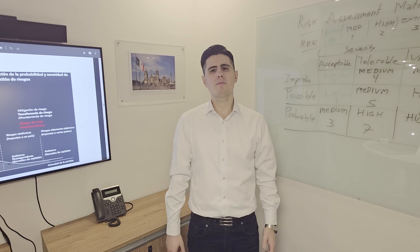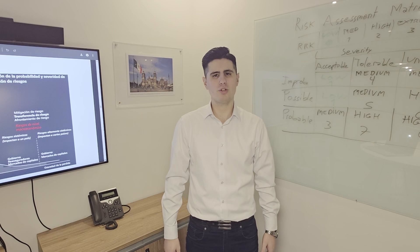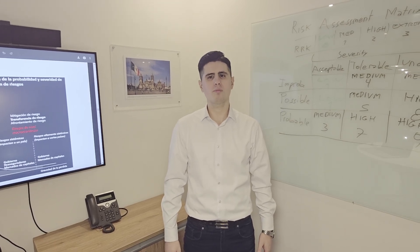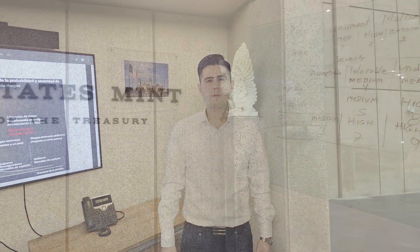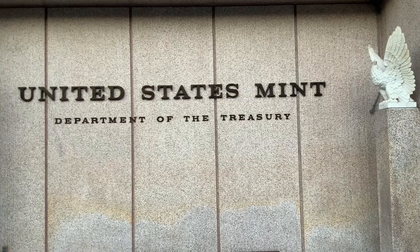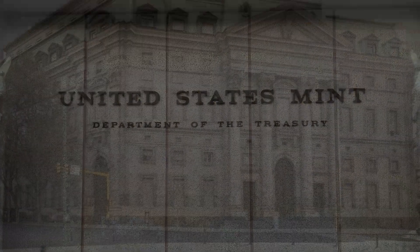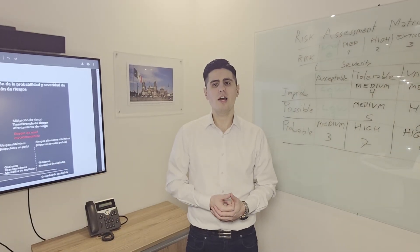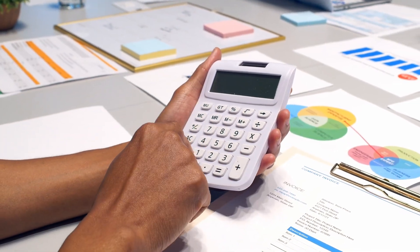No model is perfect — all models carry assumptions. That's why actuaries also focus on validation: checking how models perform, testing their limits and updating them when the world changes. For example, under current expected credit loss frameworks, banks estimate how much money they could lose from loans in the future. This requires models that project risk over time using information about the borrower and the economy. The same could be said regarding IBNR models and stress testing scenarios of future claims payments.